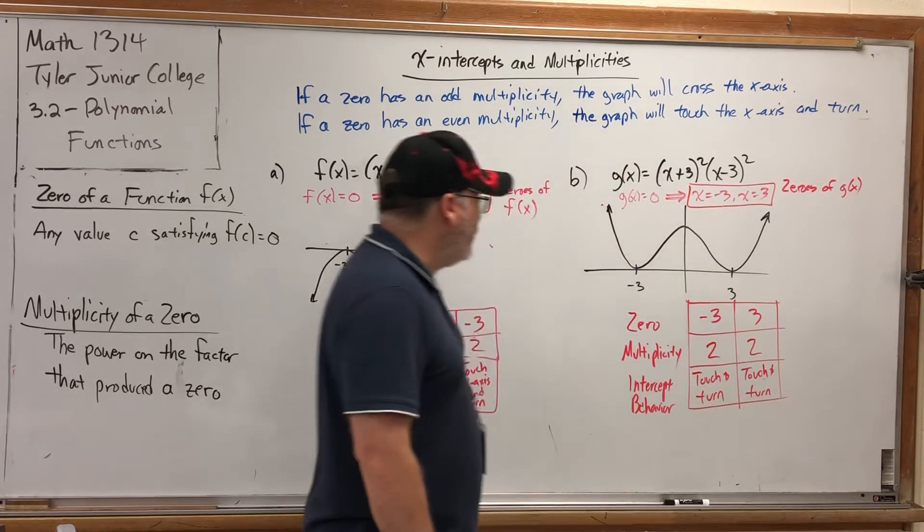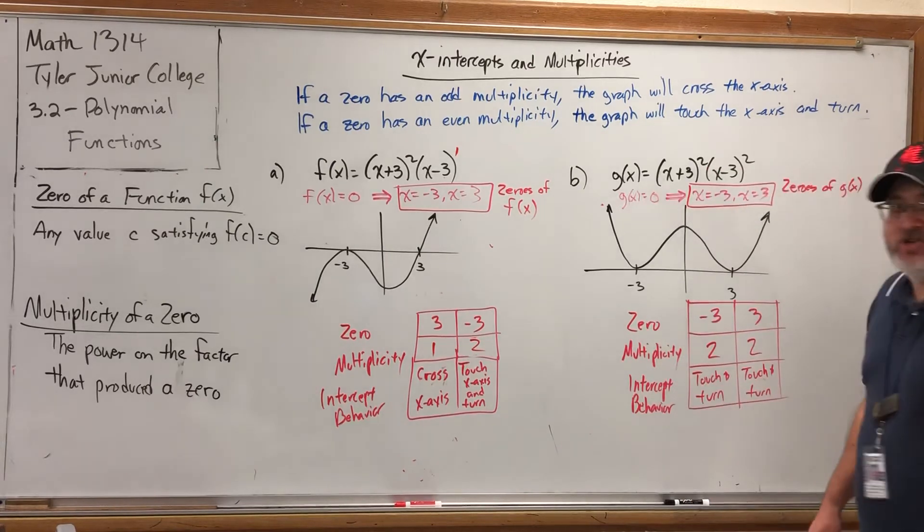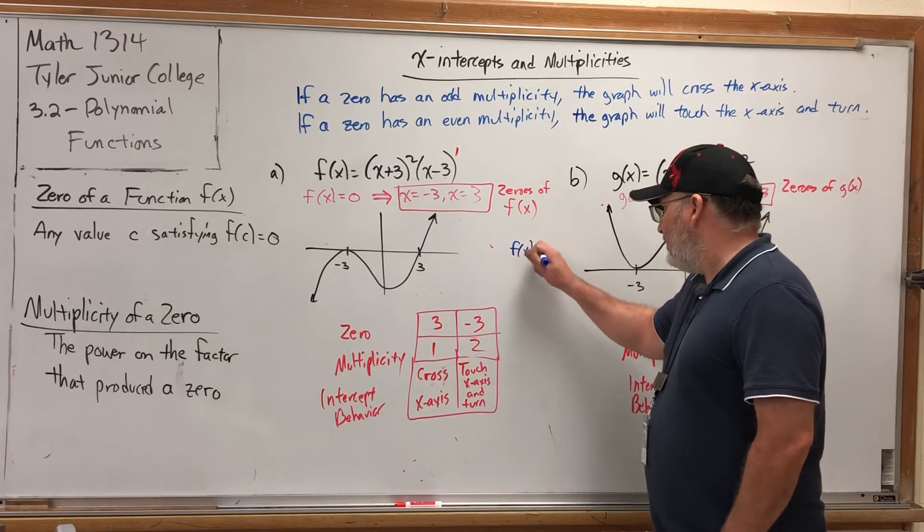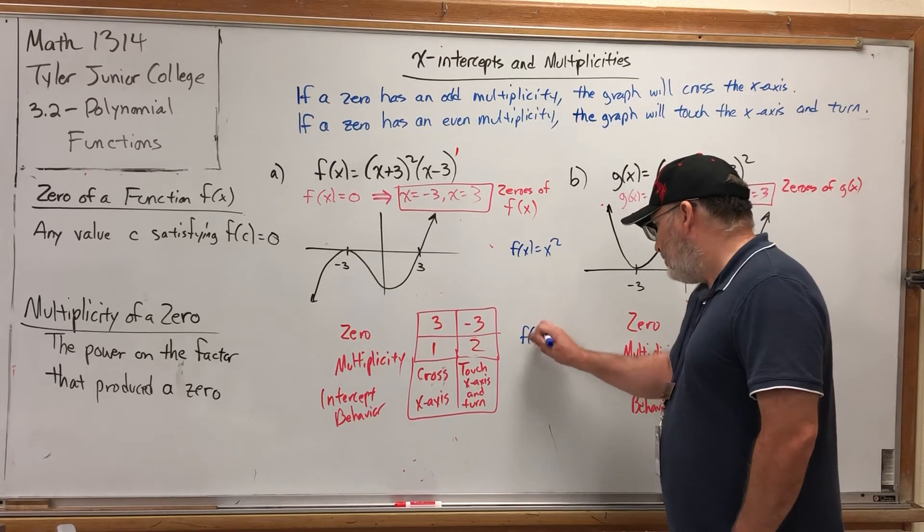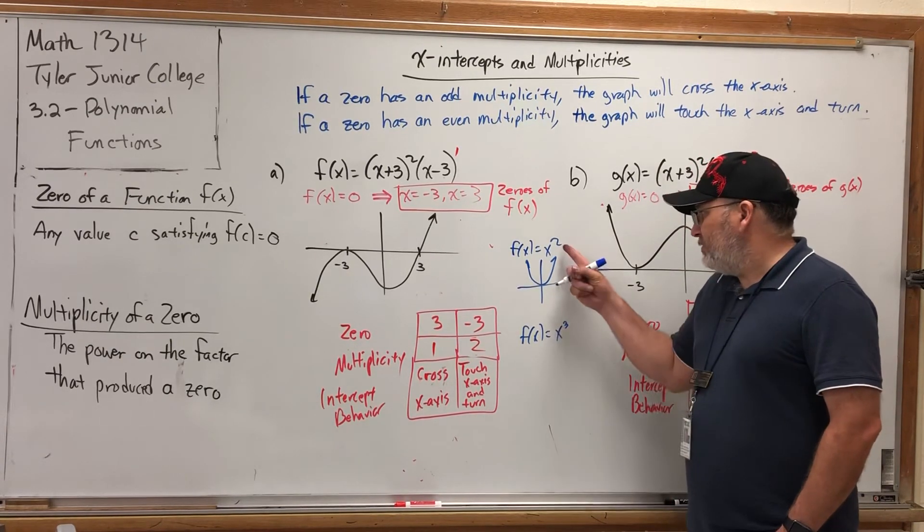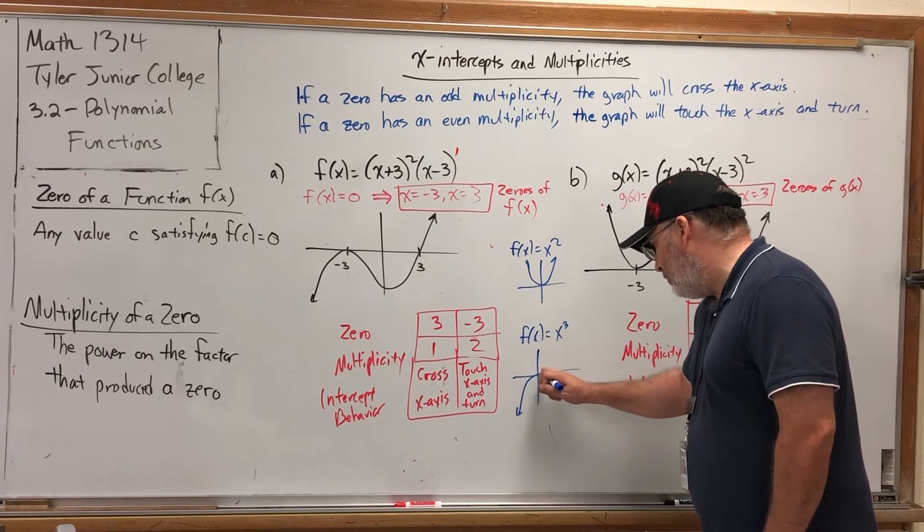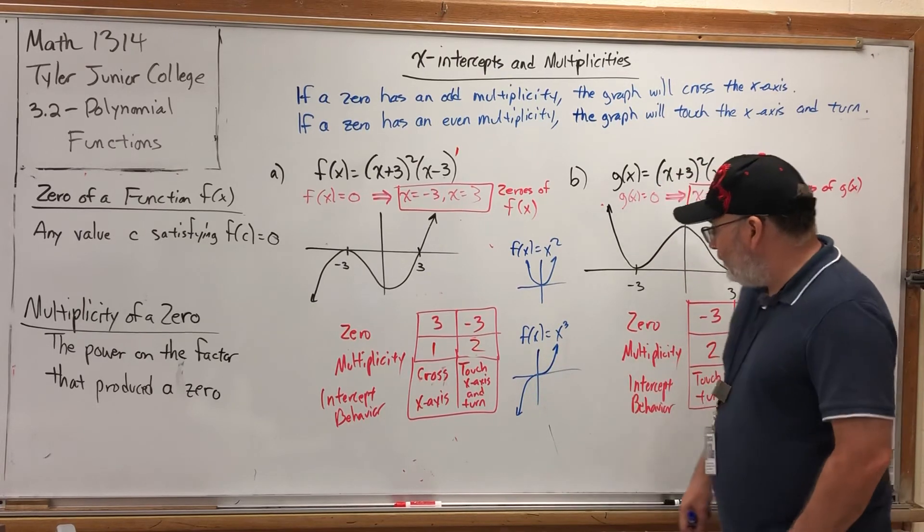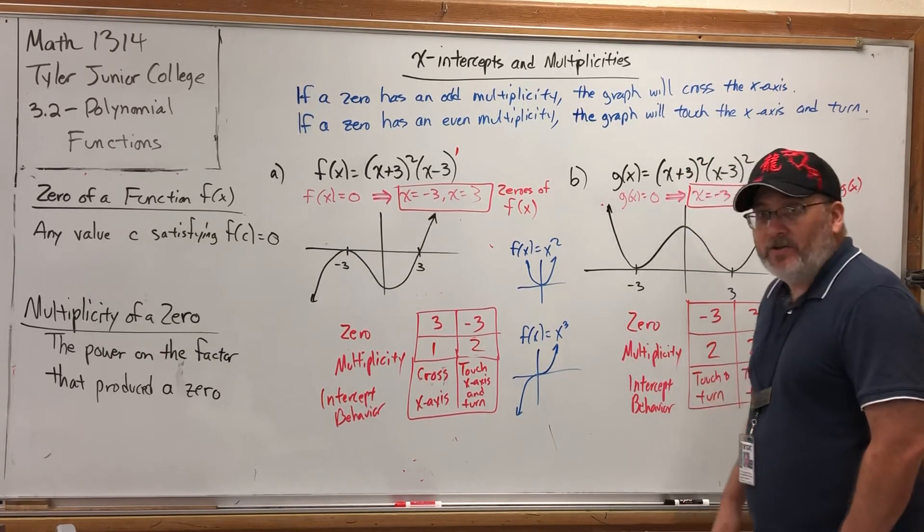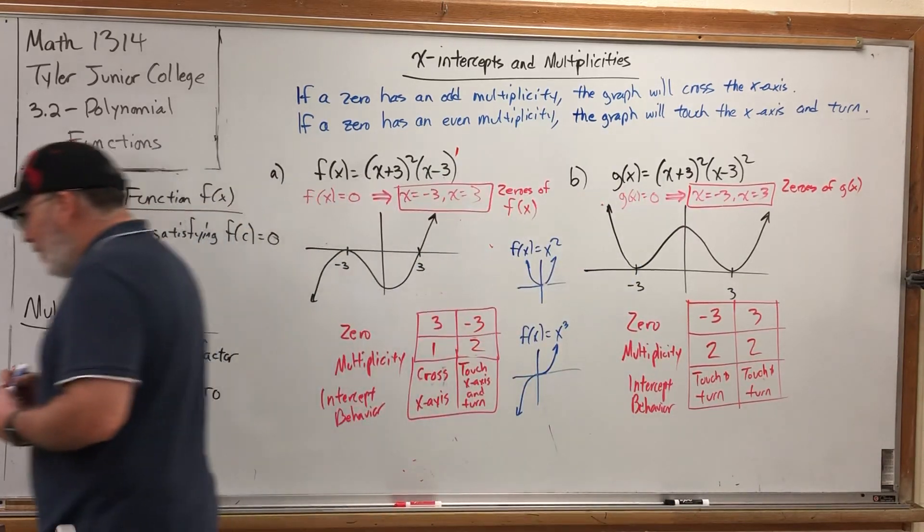So, you've just got to remember, odd crosses, even touches and turns. Now, if you're worried about keeping those sorted out, about odd crossing versus even touching and turning, you just need a couple of simple examples to remember. And there's not much simpler examples than f of x equals x squared and f of x equals x cubed. f of x equals x squared is our base parabola, which touches and turns, because the degree and the multiplicity would both be even. Whereas f of x equals x cubed is our cubic. Start slow, at the origin, it keeps going. Odd degree, the only x-intercept is zero. Zero is a zero of this function, and its multiplicity is three. And moreover, it's odd. So, even touches and turns, odd crosses, if you need a fallback to remember.